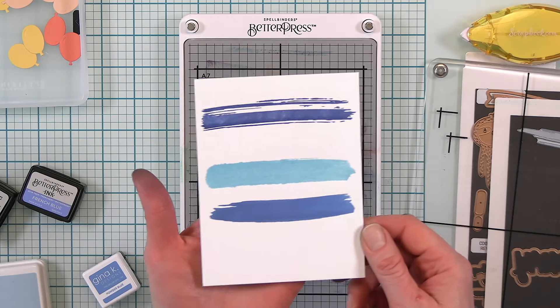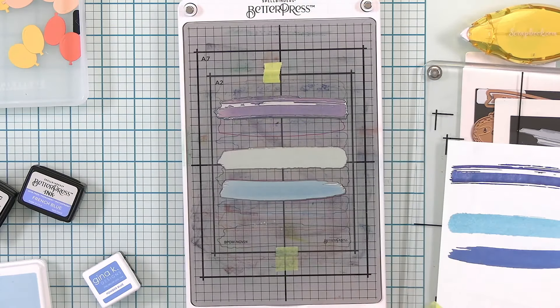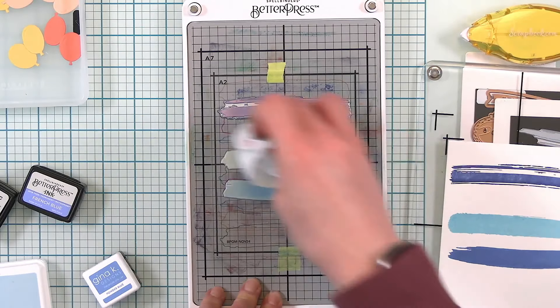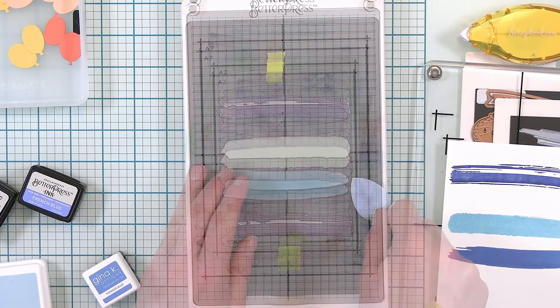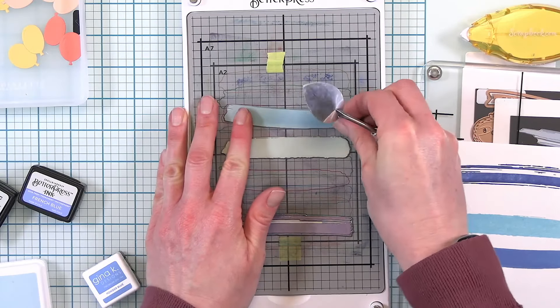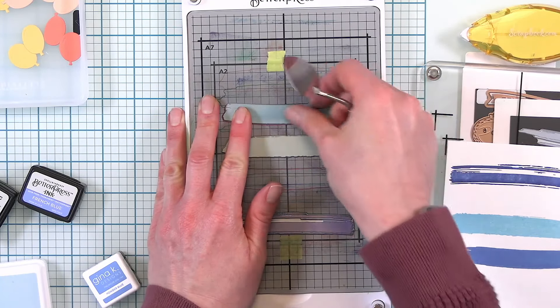Three different blues that look really nice with each other on that background. Because I'm using some dye-based ink I'm going to make sure my template is wiped off and clean before I move my plates to continue creating this Better Press background.